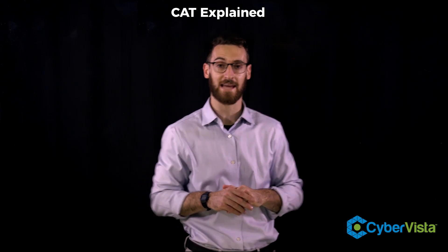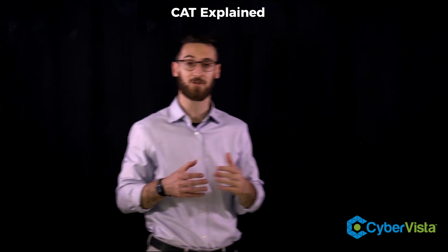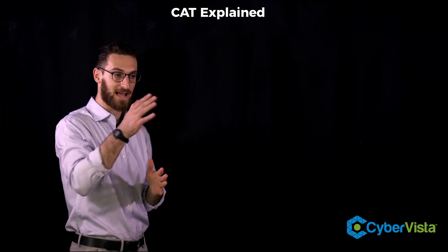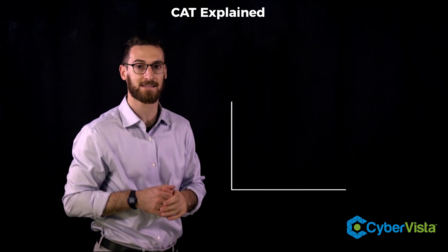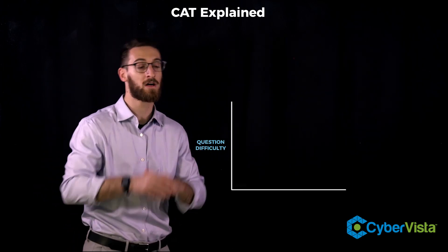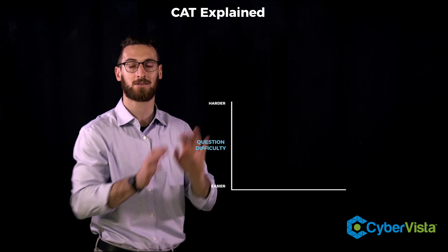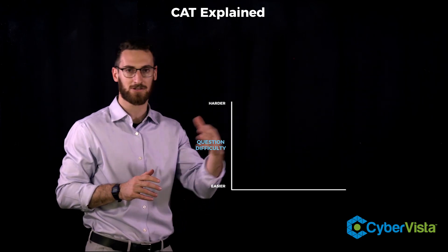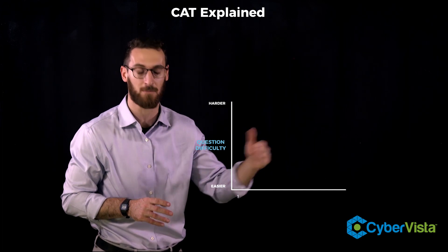So the best way to understand an adaptive test is to visualize it through a graph. We have our x and y-axis. The y-axis is the question difficulty level, which will become very important once we get into our CAT sequence. And on the x-axis is simply just a tracker of the question number.